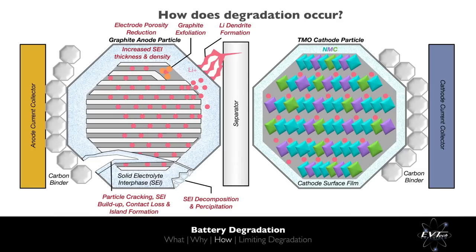Between 0 and 100% state of charge, the volume of the anode will change by approximately 13%. The fatigue caused by repeated expansion and contraction of the anode will cause some loss of contact with the electrically conductive carbon binder, resulting in an increase of electrical resistance.